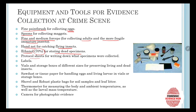Protocol sheets are used for writing down what specimen was collected in order to have proper data. Labels are used to label the different specimens. Vials and storage boxes of different sizes are used for preserving living and dead insects separately. Sawdust or tissue paper is used for handling eggs and living larvae in vials or storage boxes. Shovel and robust plastic bags are used for collecting soil samples and leaf litter. A thermometer is used for measuring the body temperature, ambient temperature, and larval mass temperature.